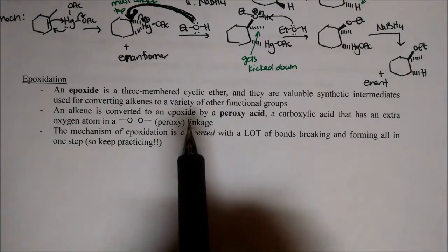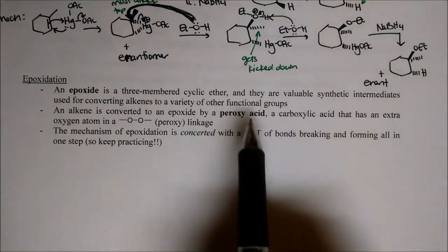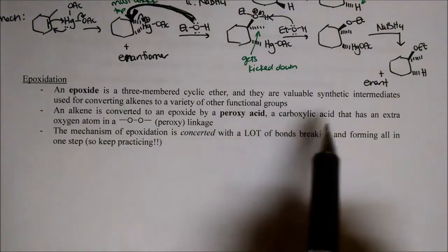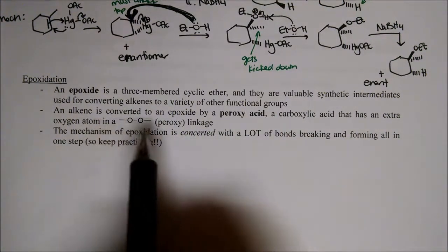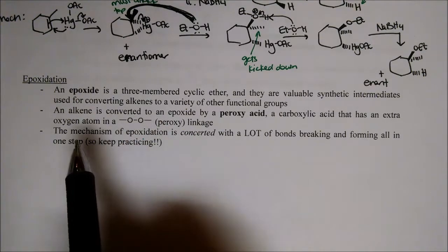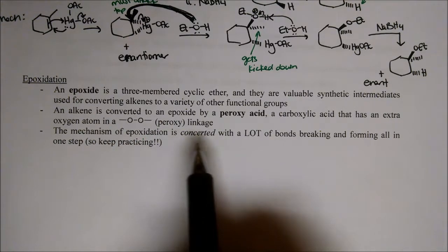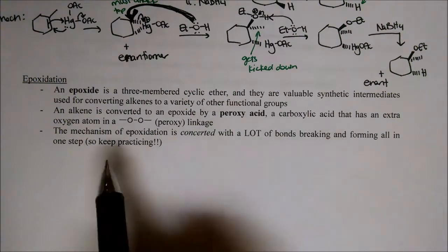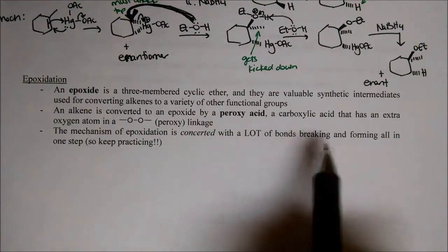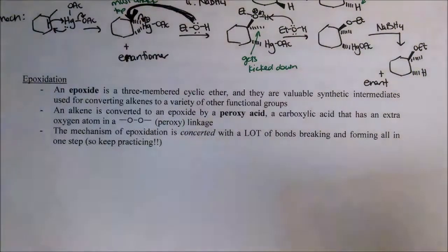An alkene is converted to an epoxide by use of a peroxy acid — a carboxylic acid that has an extra oxygen atom with a peroxy linkage. The mechanism of epoxidation is concerted, with a lot of bonds breaking and forming all in one step.